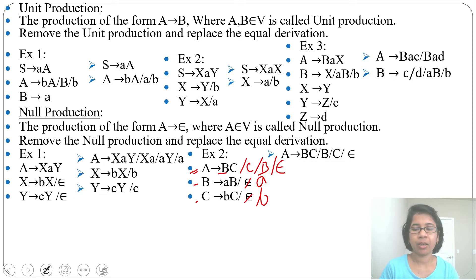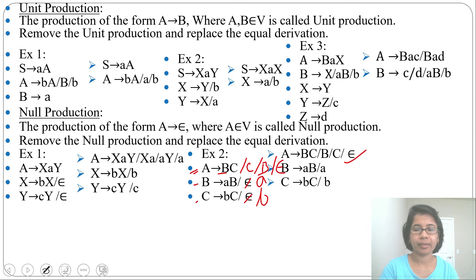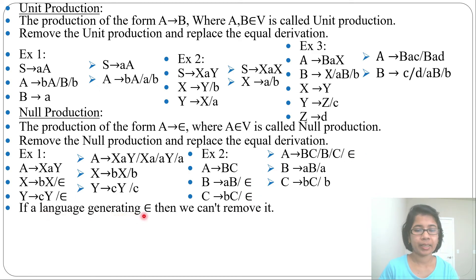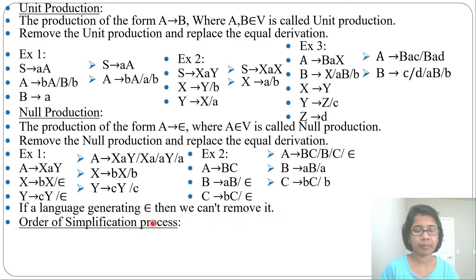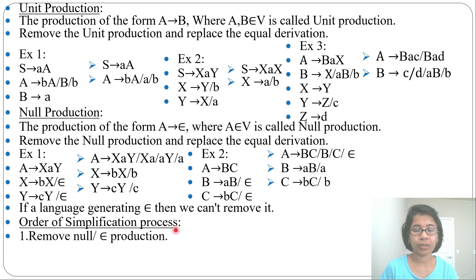The language is generating epsilon, so epsilon cannot be removed from A's production entirely. From B and C we remove the null productions, but from A we cannot. After removal of null productions: A derives 'BC' or 'B' or 'C' or epsilon; B derives 'AB' or 'A'; C derives 'BC' or 'B'. Epsilon remains because the language itself generates epsilon.